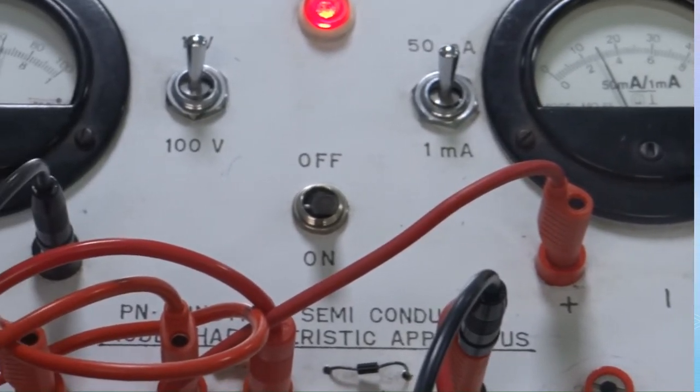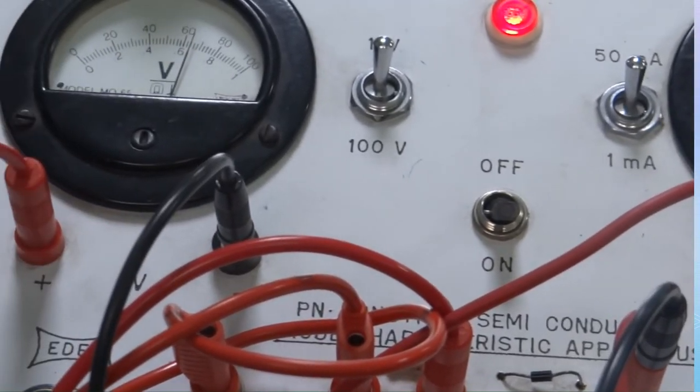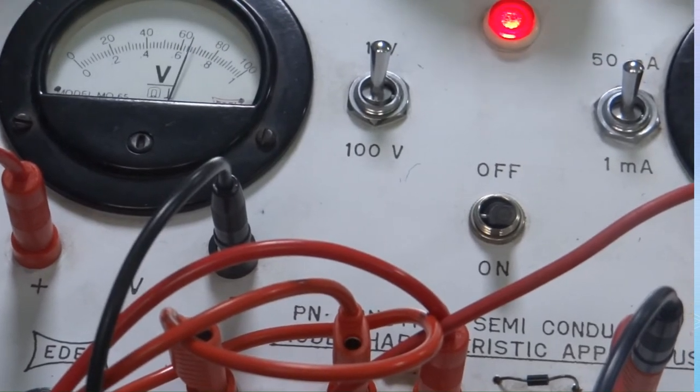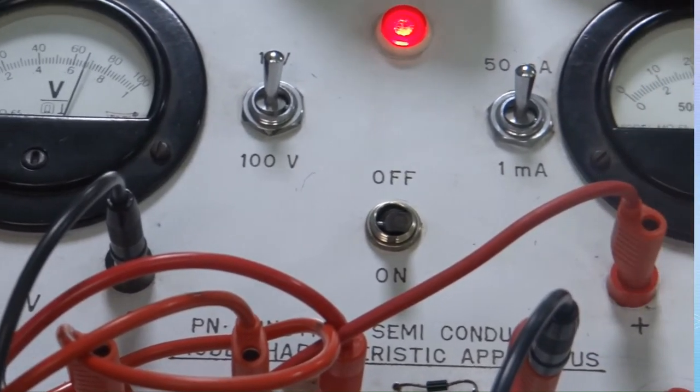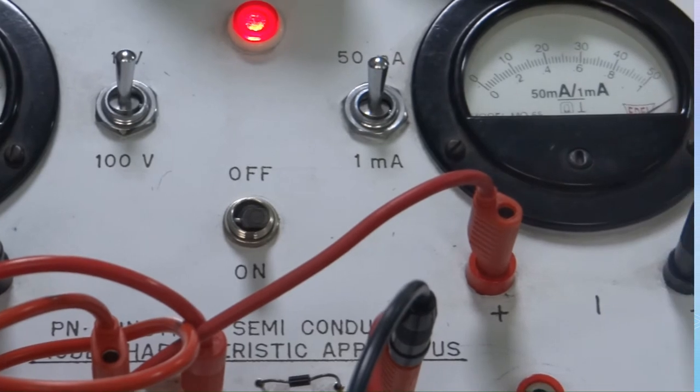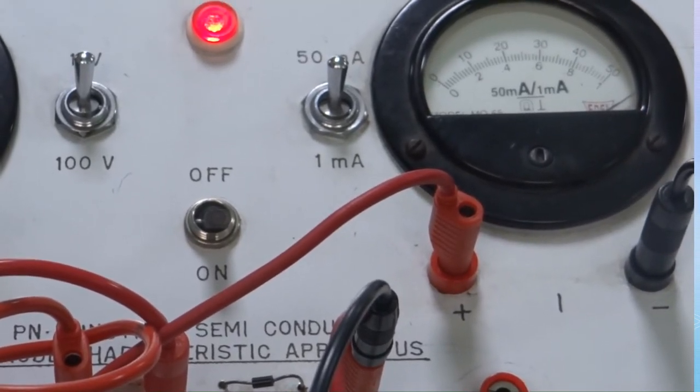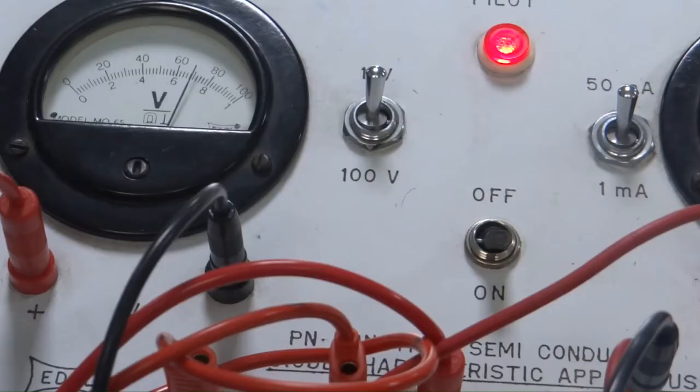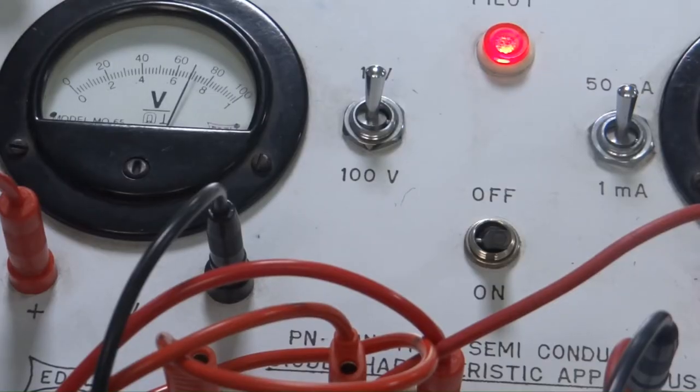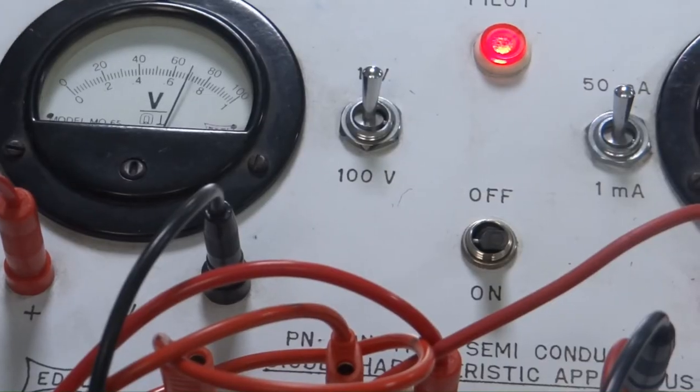Now look at the voltmeter. It is fairly stable and the value of current is varying. This is how you will see the forward characteristics of a PN junction. We will take 10 sets of readings and then we will plot a graph.